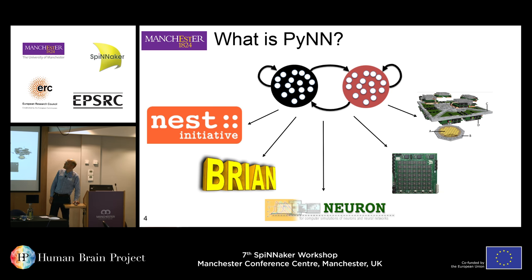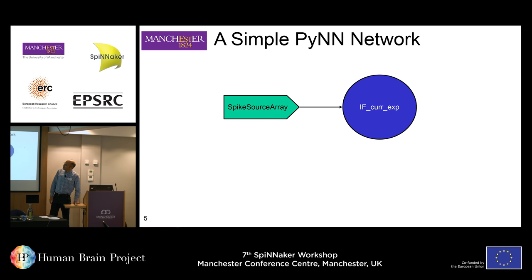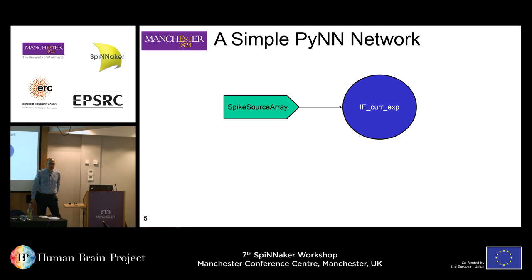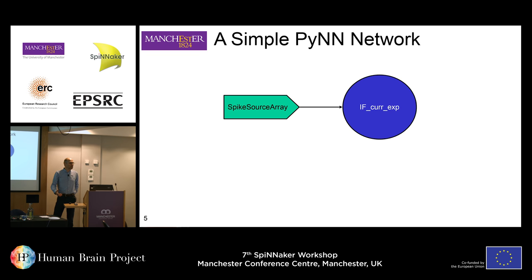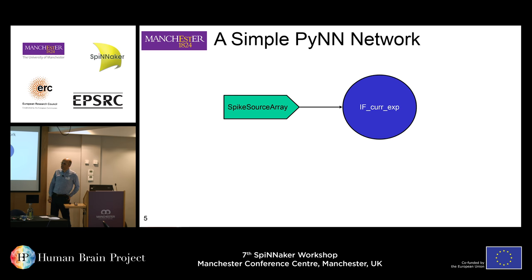My first toy example is going to be very simple. It's going to be two populations, each population one neuron big. We're simply going to have a spiking source array which at time zero is going to send one spike. And we're going to have an ifcurx model which will build up over time until the voltage gets to a high enough level that it spikes, sends a spike, and then drops back down again.